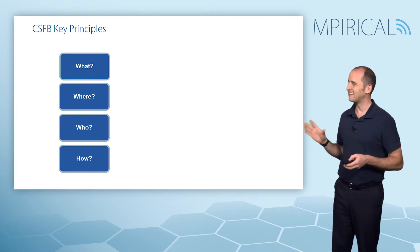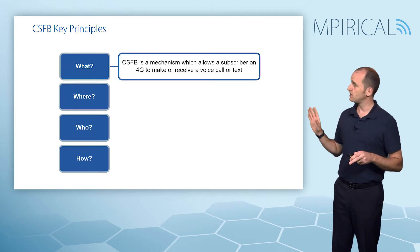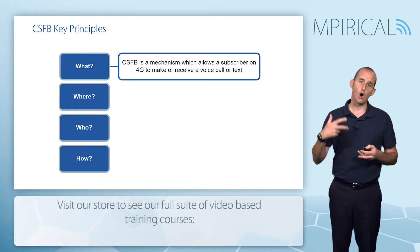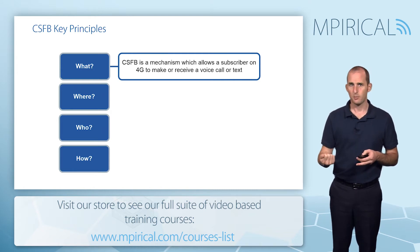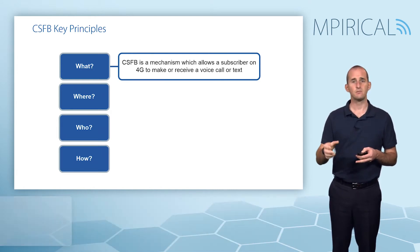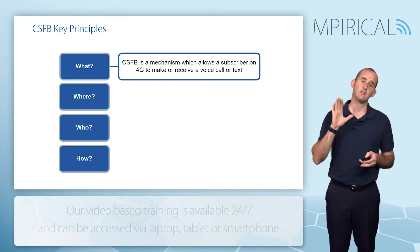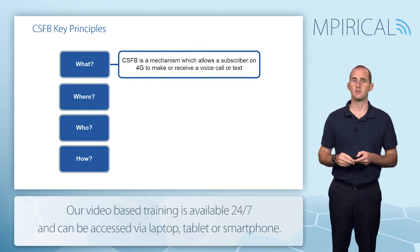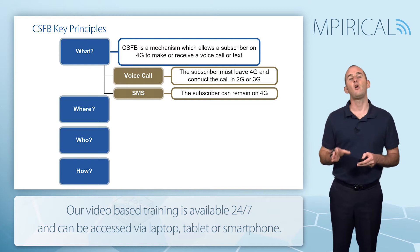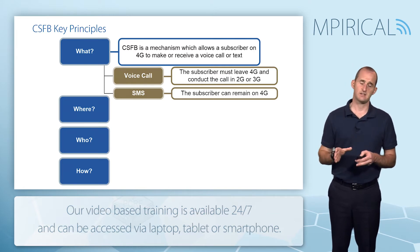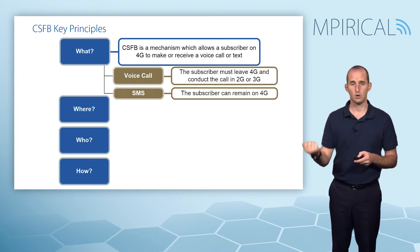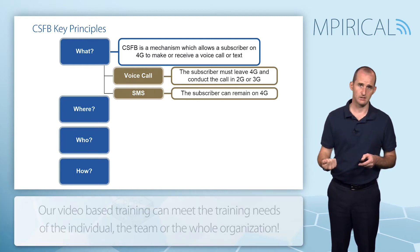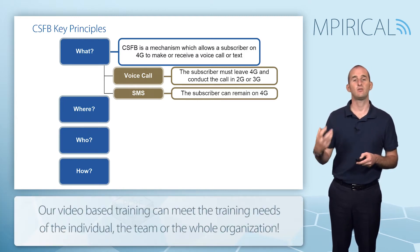What exactly is circuit switch fallback? Circuit switch fallback allows subscribers on a 4G network to essentially conduct voice call procedures or text procedures. However, there is a drawback: subscribers who wish to make a voice call will ultimately be required to fall back to 2G or 3G access. They must leave the 4G network behind and conduct that call — whether mobile originated or mobile terminated — in the 2G or 3G network.